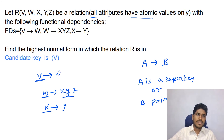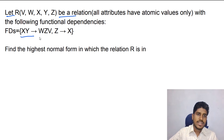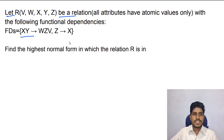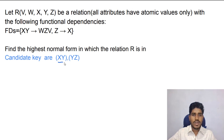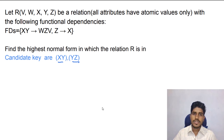Let us see another example. Let R be a relation with the following functional dependencies: X, Y determine W, Z; and Z determines X. First we have to find the candidate key. The candidate keys are X, Y and Y, Z. All attributes have atomic values, so this relation is in first normal form.